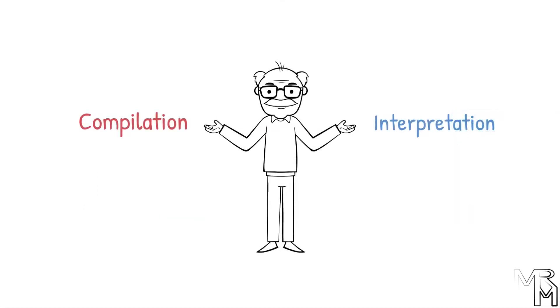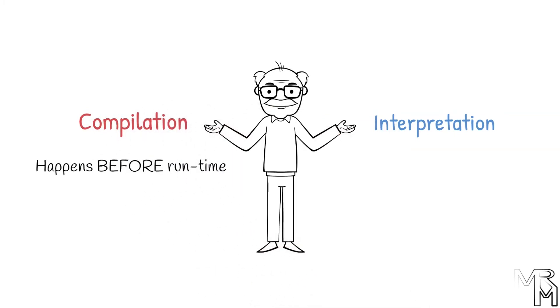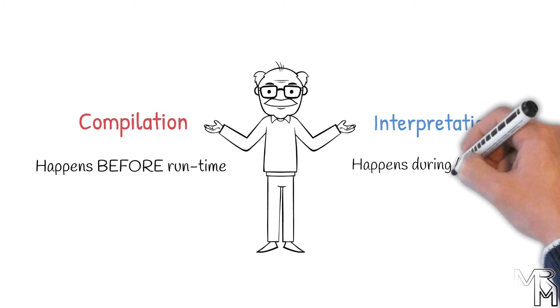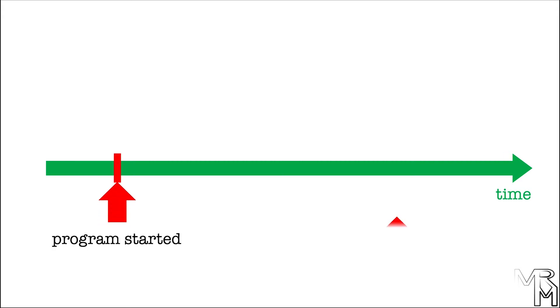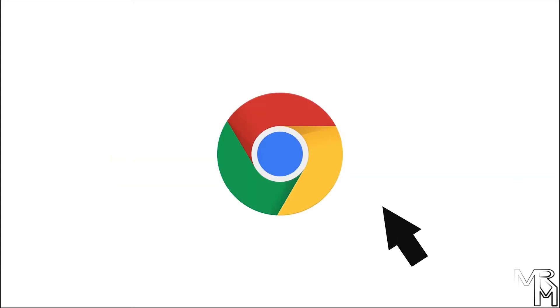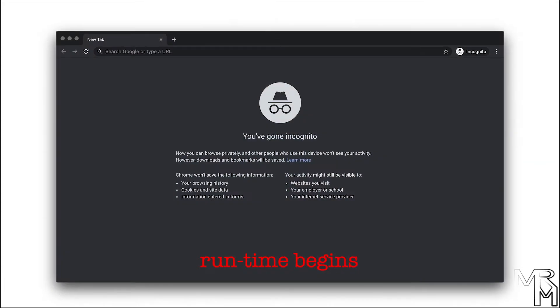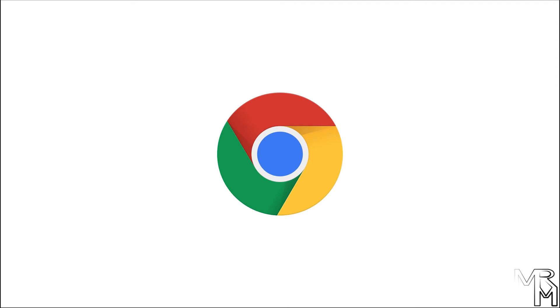Another difference between compilation and interpretation is that compilation happens before the so-called runtime, whereas interpretation happens during or at runtime. What is runtime? It is a period of time that begins when you start a program and ends when you close the program. For example, let's look at Google Chrome — when I open it, its runtime begins, and when I close it by clicking the close button, its runtime ends. This example is not 100% accurate, but it's accurate enough to give you an idea of what runtime is.